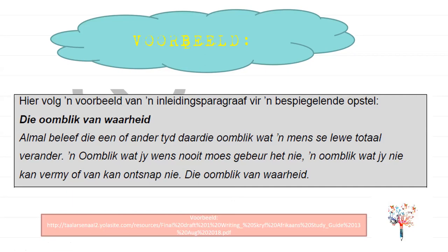Here's an example of a Bespiegelende Opstel. The title is 'Die Oomblik van Waarheid' — the moment of truth. The writer wrote: 'Almal beleef die een of ander tyd daardie oomblik wat die mens se lewe totaal verander' — all of us have that moment in life where our life totally changes. It's a powerful, linked introduction.